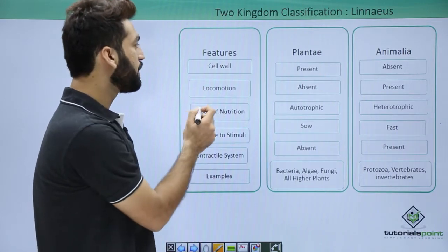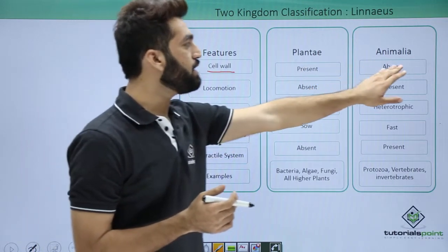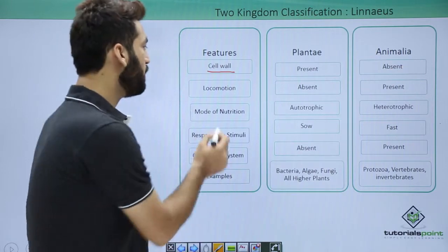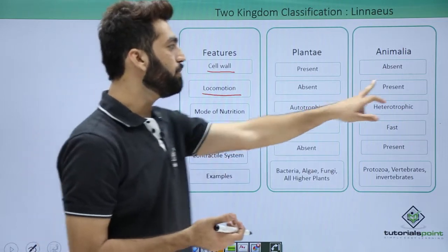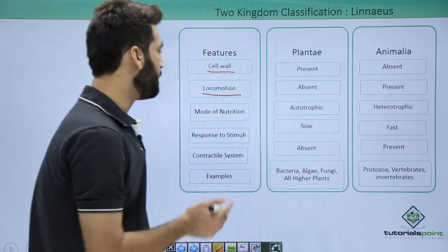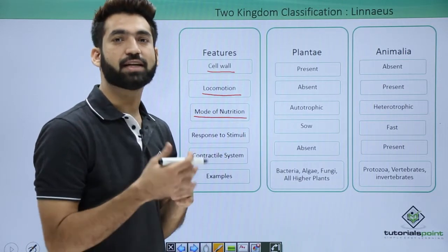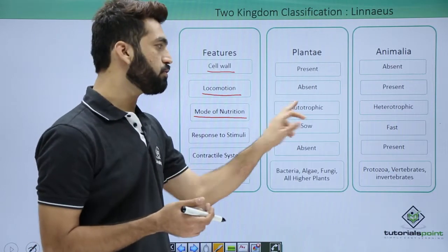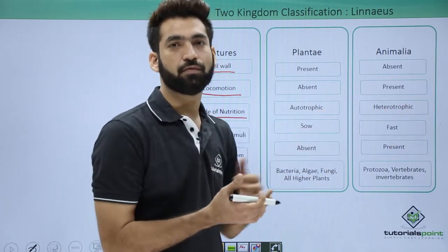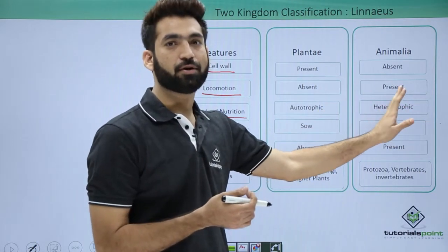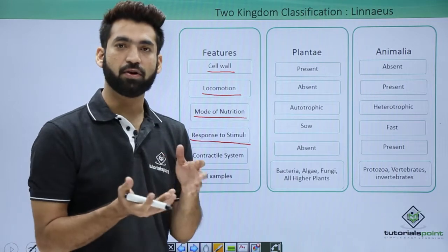Looking at the differences: the cell wall is present in plants but animals don't have a cell wall. Plants cannot locomote — no mode of locomotion is present in plants, whereas animals can move. Regarding mode of nutrition, plants are autotrophic (also called holophytic mode of nutrition), while animals consume food from plants or other sources and are called heterotrophic.